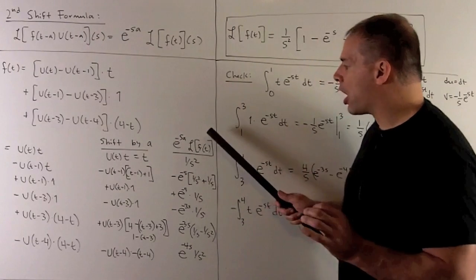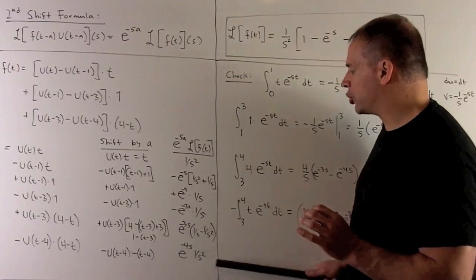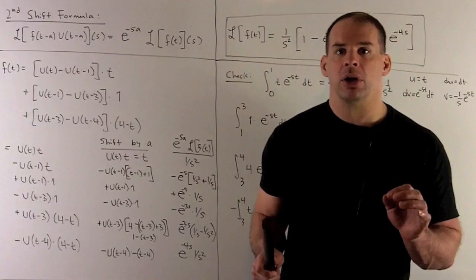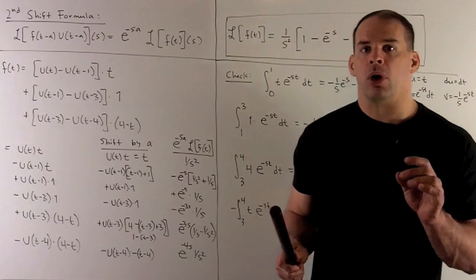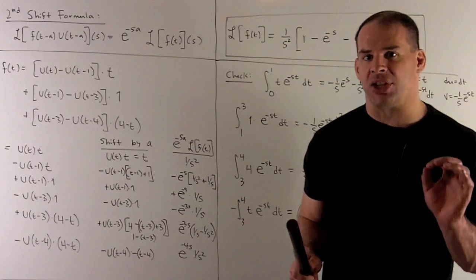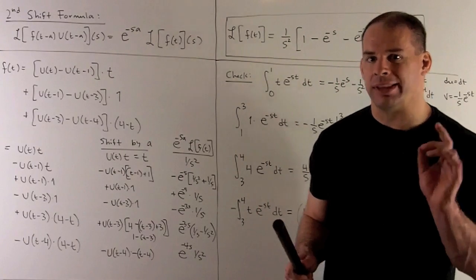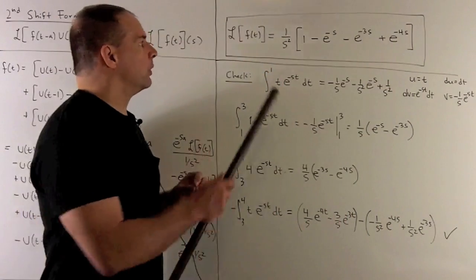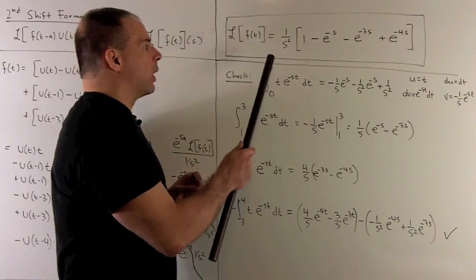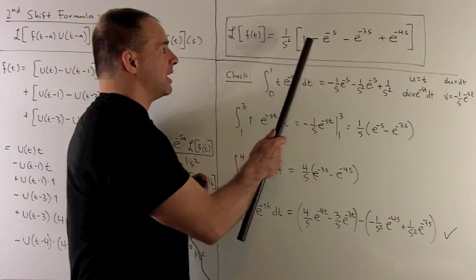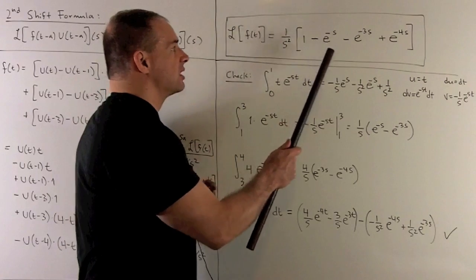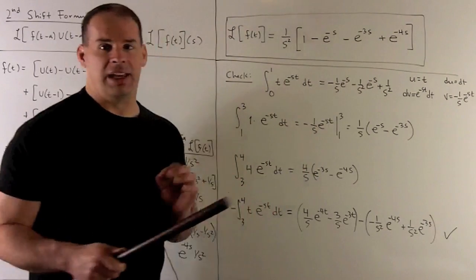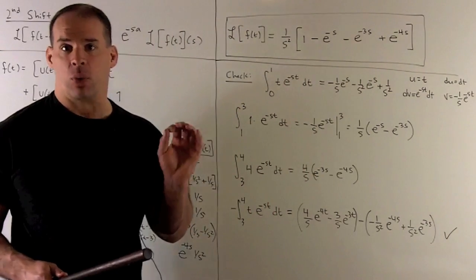Here are all of our Laplace transforms. Taking their sum, all terms with 1 over s cancel out, leaving the Laplace transform equal to 1 over s squared times (1 minus e to the minus s minus e to the minus 3s plus e to the minus 4s).